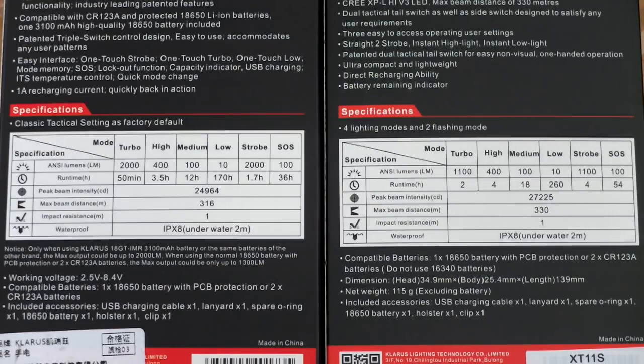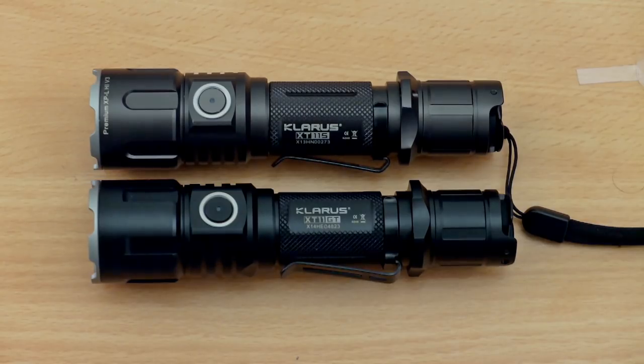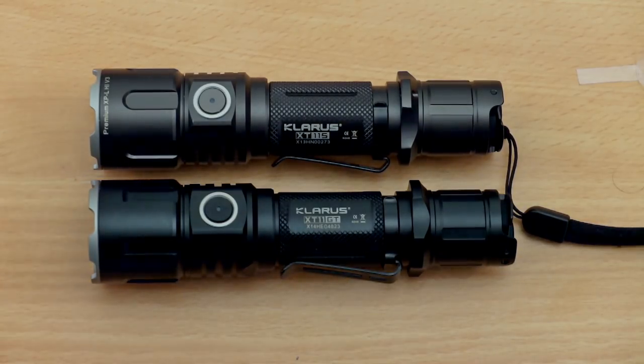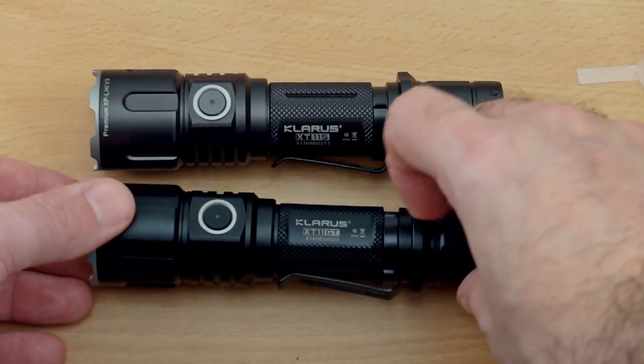You can see here there's a slight difference in specification and runtime. The S actually has slightly longer beam distance and peak intensity. We'll have a look why that is in a minute. They're quite similar, in fact almost identical in design. The 11S has a sort of gunmetal finish.